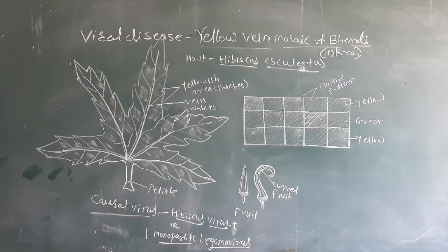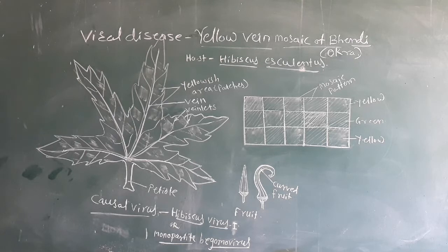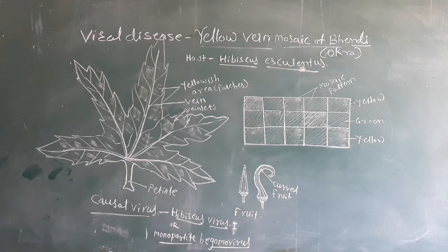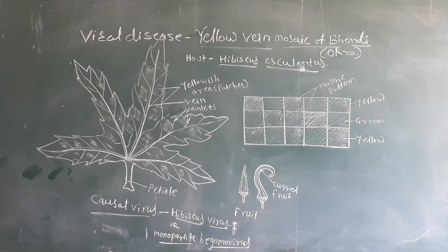Bhendi is a popular vegetable cultivated because of its rich iron content and high nutritive value. The disease Yellow Vein Mosaic was first reported by the scientist Kulkarni in 1944. Later, several experiments by Varma in 1950, and then Jaha and Mesra in 1955, cleared the picture of the disease.